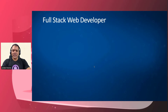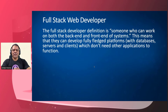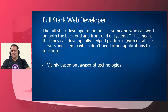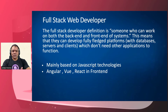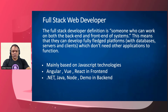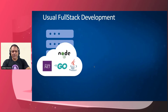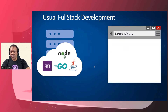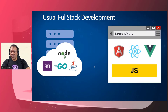When we talk about full stack web developers, the official definition is someone who can work on both backend and frontend — someone who knows all the backend and frontend technologies. Usually, frontend technologies are mainly based on JavaScript technologies like Angular, Vue, React as a frontend, and then you have .NET, Node, Java, Deno as a backend. In diagram form, when doing full stack development, we have a backend with Node, .NET, Go, or Java, and a frontend with Angular, React, Vue, or any JS framework, which communicates with the backend.